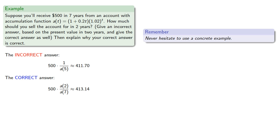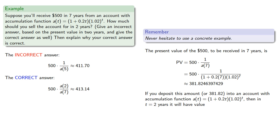So the present value of the $500 to be received in seven years is... And if you deposit this amount, or the rounded amount $381.82, into an account with the same accumulation function, then in two years that amount will be...